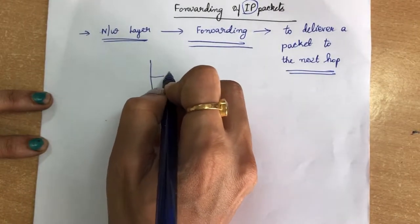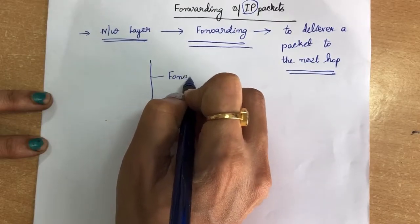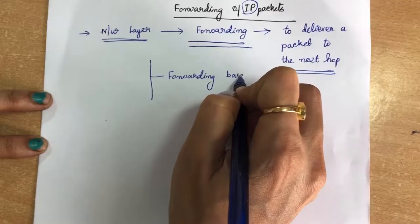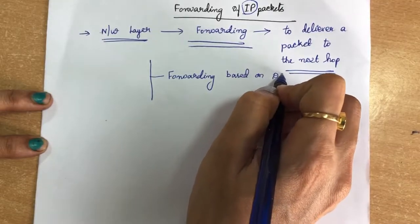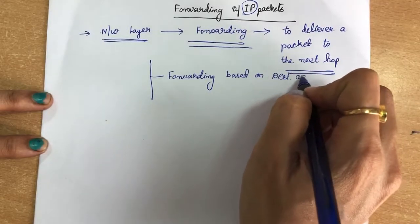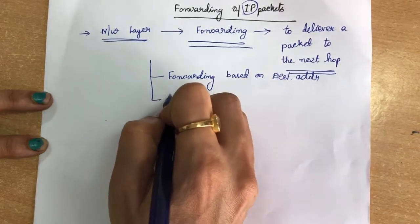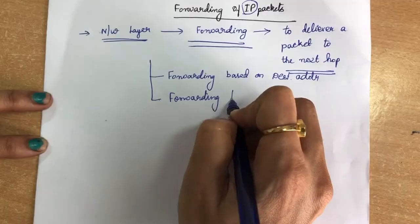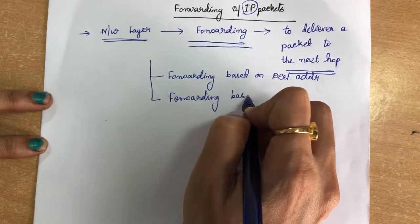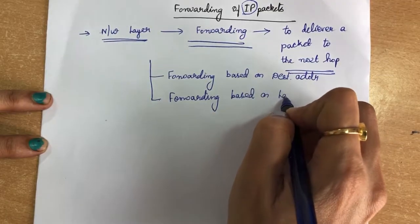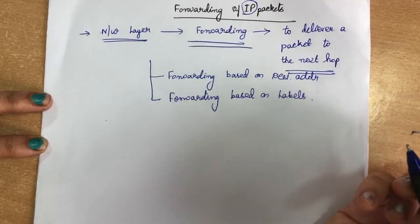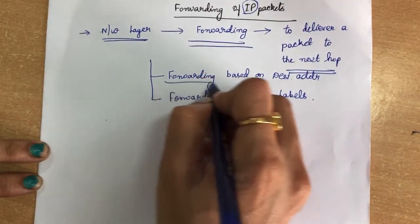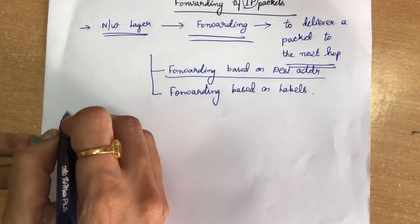Forwarding can be done in two ways. One is forwarding based on the destination address, and the second is forwarding based on labels. These are the two topics we are going to cover, starting with forwarding based on destination address.